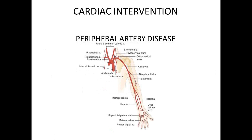The arterial supply of the upper extremity doesn't commonly occlude. However, when we're doing cardiac catheterization and coronary intervention, we use the radial artery — we cannulate the radial artery. So it's important to have an idea of the arterial supply of the upper extremity. The radial artery is on the lateral aspect of the upper limb — the same side as the thumb.